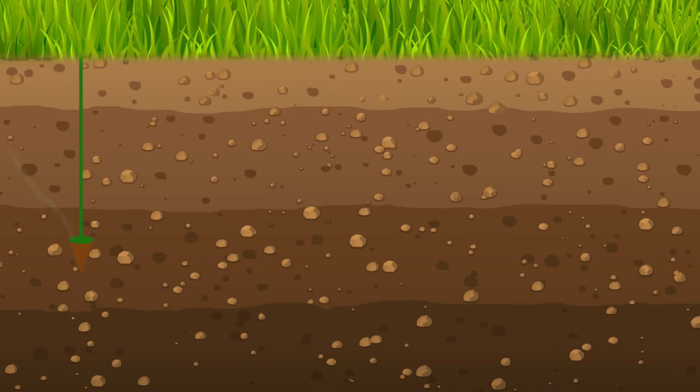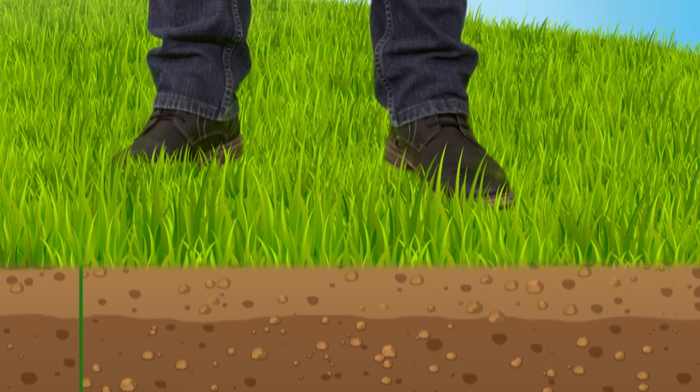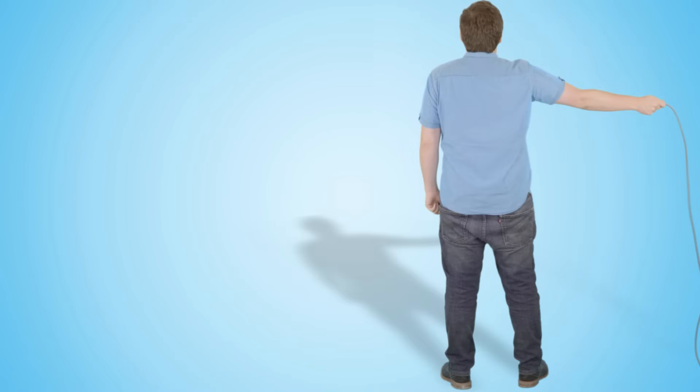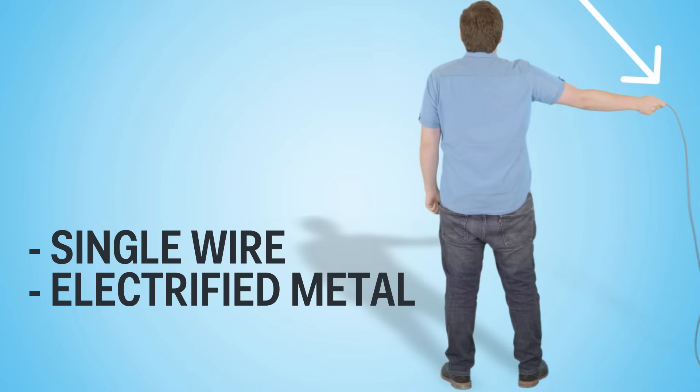But now, because of grounding, half of the electrical system is always indirectly connected to you through your feet. Meaning you only need to touch a single wire or a metal object electrified by one to become an unfortunate circuit.